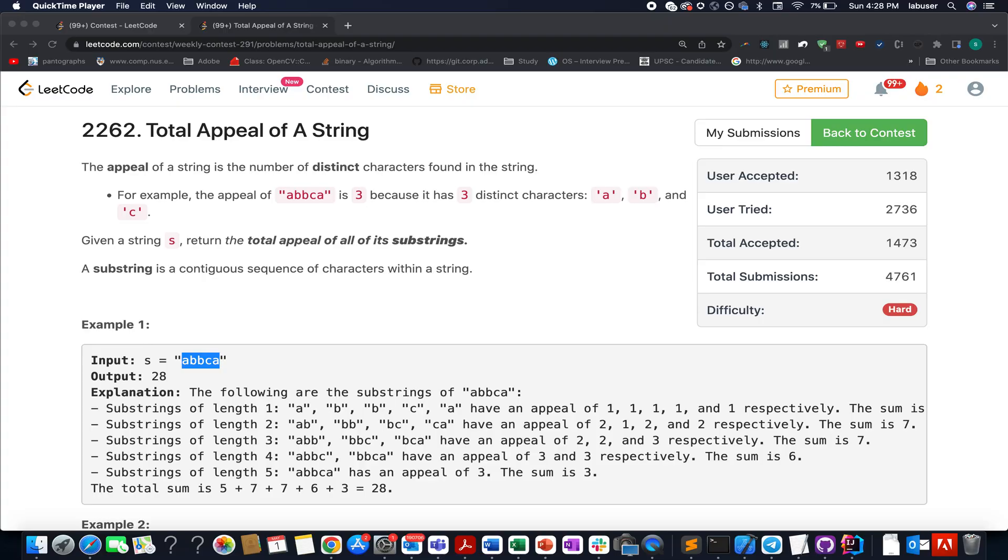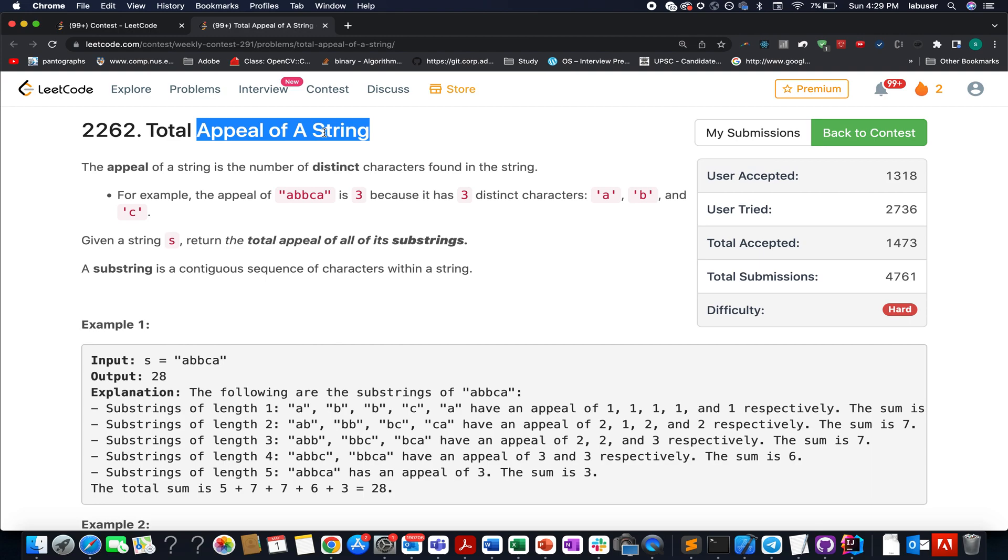Continuing the series of weekly contest 291, here comes the last question of the contest: Total Appeal of a String. In this question, we need to identify the total appeal of all the substrings of a given string.